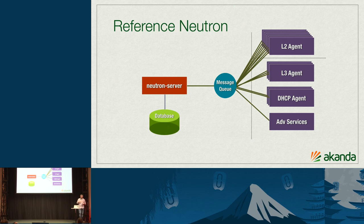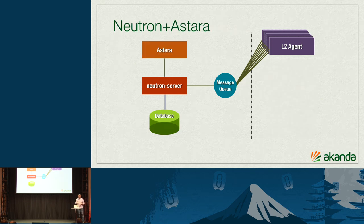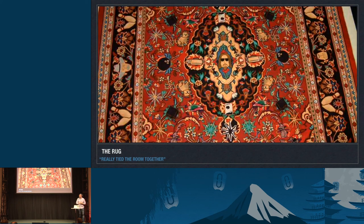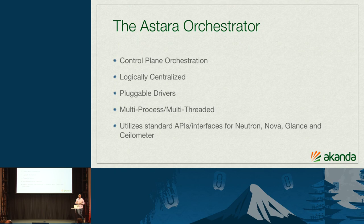If you take a look at the reference Neutron diagram, on the right-hand side of the screen you'll notice a fleet of microservices. With ASTARA, we simplify things by having a single process which is responsible for orchestrating the network functions. Central to that is a process we've nicknamed 'the rug' — an escape prototype name that stuck. If you've seen The Big Lebowski, there's a reference to the rug tying the room together. ASTARA also loosely translates to 'carpet,' which is the genesis of the name. The ASTARA orchestrator is control plane orchestration; no components of ASTARA are in the data path. We wanted to take the best network functions available, whether open source or proprietary, and orchestrate those via a pluggable driver interface.